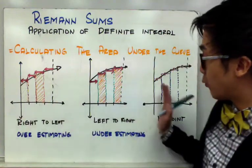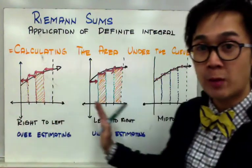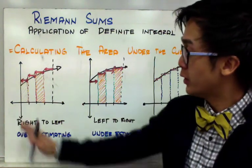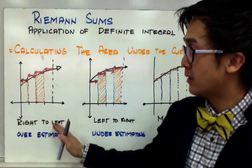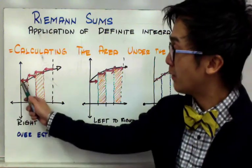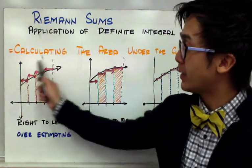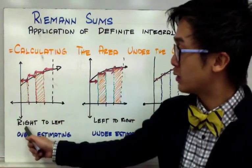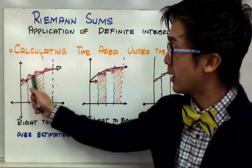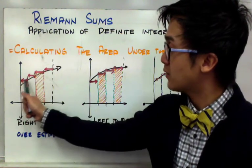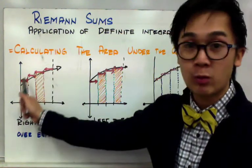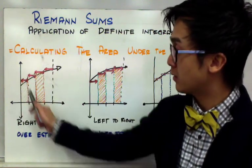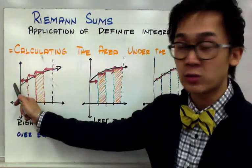There are methods we are going to use today to approximate the value of area under the curve without using a definite integral. The first method is the right-to-left method. You'll notice some overestimation happening in our Riemann sums because using the right-to-left method gives an overestimated area due to the excess value shown in our rectangles. This method starts from the right, moving to the left.